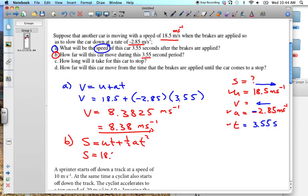So S is equal to 18.5 times the T, which is 3.55, plus the half times the A, which is minus, don't forget that, minus 2.85 times the time of 3.55 squared. Don't forget the squared. Often students will forget the squared. They'll forget that, and they'll forget that. So we put that all into our calculator.